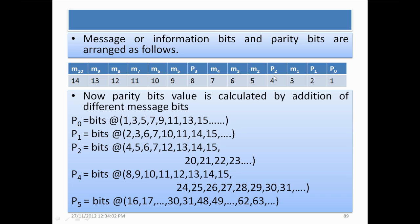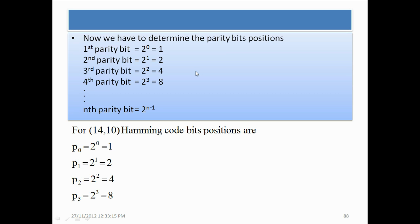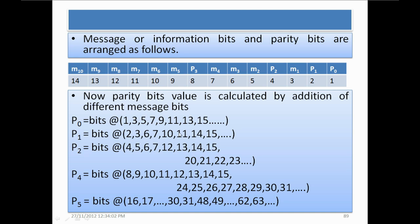So we have a message of 10 bits and we add 4 parity bits. P0 is placed at position 1, P1 at position 2, then a message bit at position 3, P2 at position 4, and P3 at position 8 — as calculated: positions 1, 2, 4, and 8.